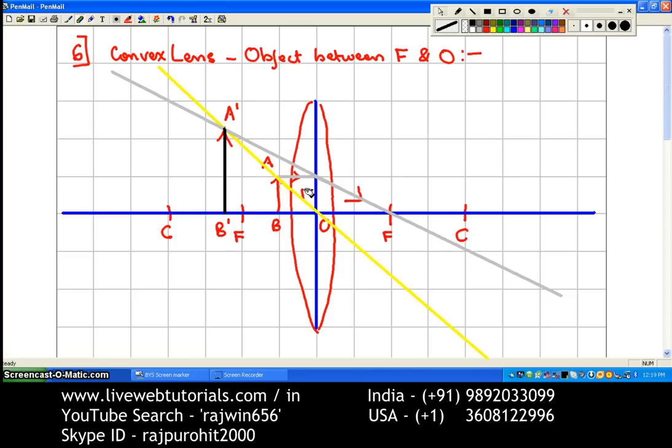This is through the principal axis, the ray is travelling, and it is going to travel along the same path. And then both of these rays are produced backwards to get the image A dash B dash.